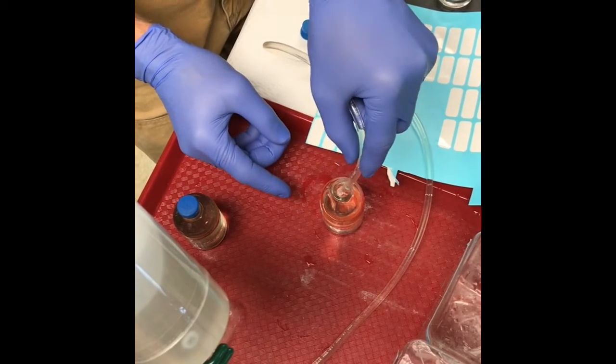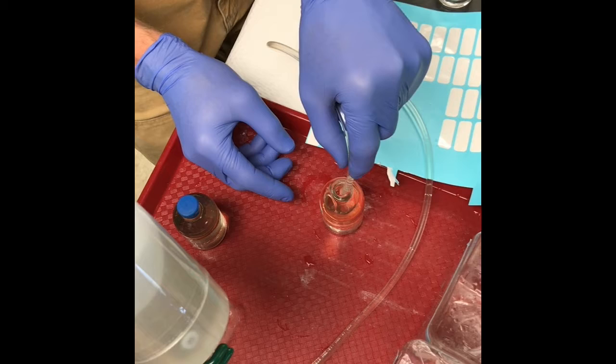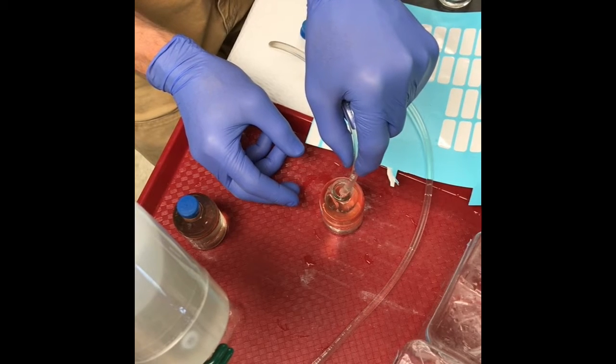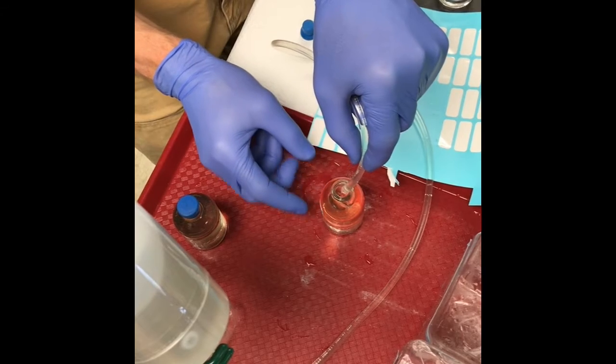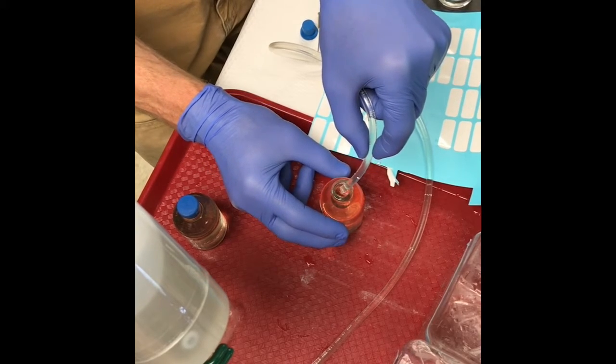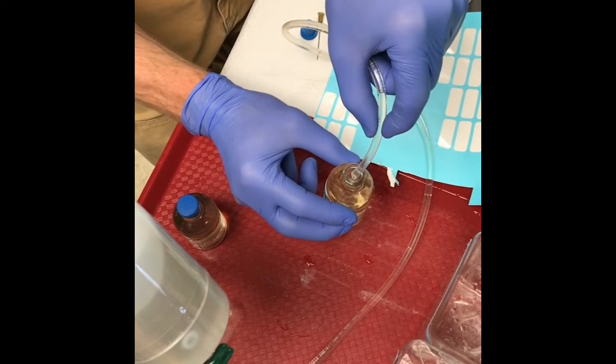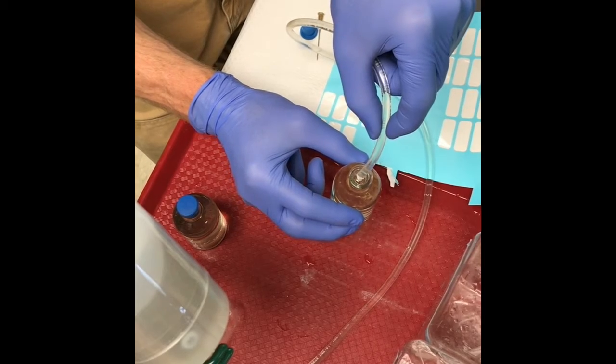I've already preloaded this bottle with two milliliters of one molar zinc acetate to preserve the sulfide, then labeled it. I'm filling it up to about halfway through the neck of the bottle because we're going to try to get all the air bubbles out.